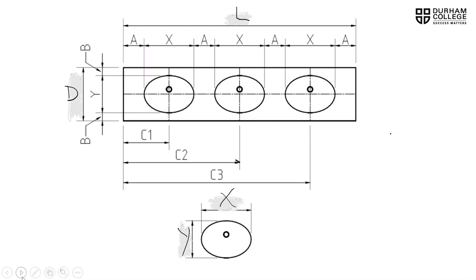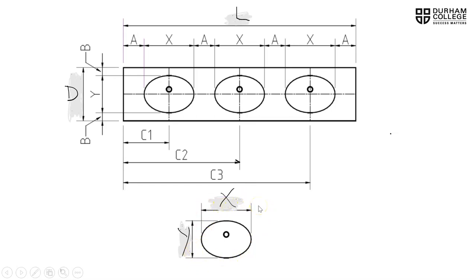Here's the diagram again of our three lavatories in our countertop. We'll need a couple of other dimensions to get us going in order to find A, B, C1, C2, and C3. First, we need to know the overall length of the countertop from one end to the other, represented by L. We'll also need to know how deep our countertop is, represented by D. We also need to know the width of our domestic lavatory, represented by X, and how deep it is, represented by Y.